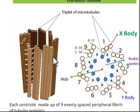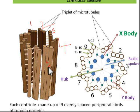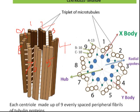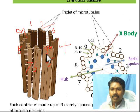The centriole is made up of 9 evenly spaced peripheral fibrils. You can count them: 1, 2, 3, 4, 5, 6, 7, 8, 9 - nine peripheral fibrils. Each fibril is made up of a triplet - triplet 1, 2, and 3 - so 3 peripheral fibrils forming peripheral triplets. These peripheral triplets are arranged in sets of 3.